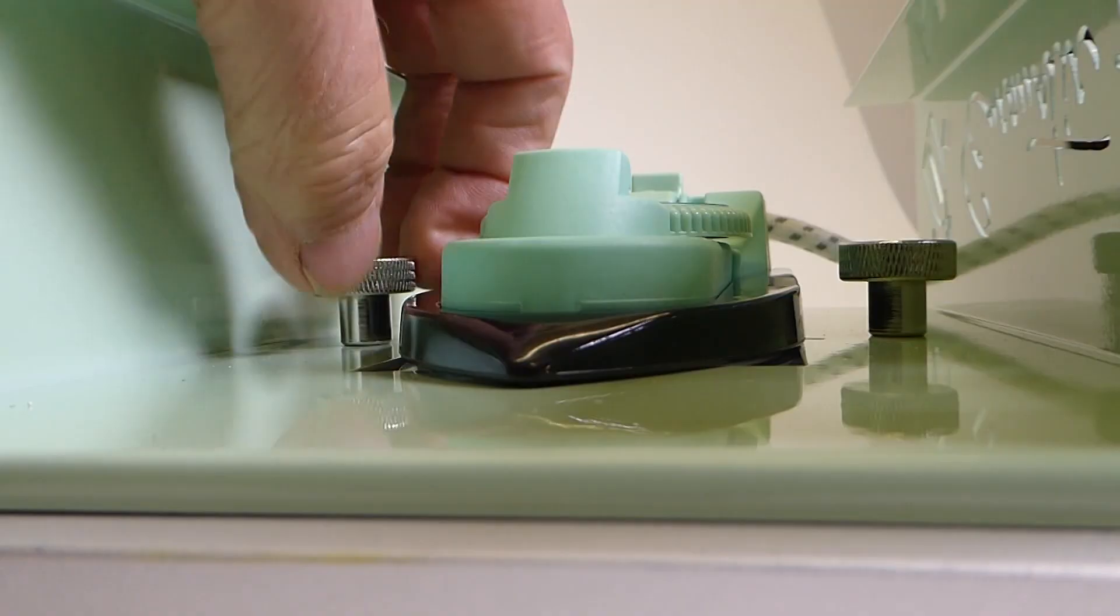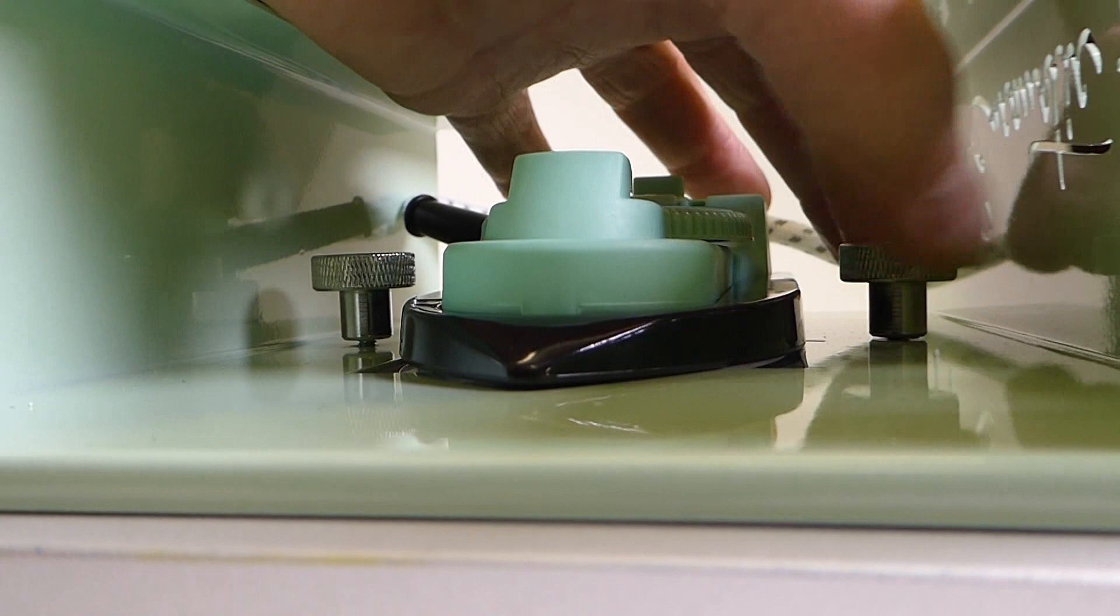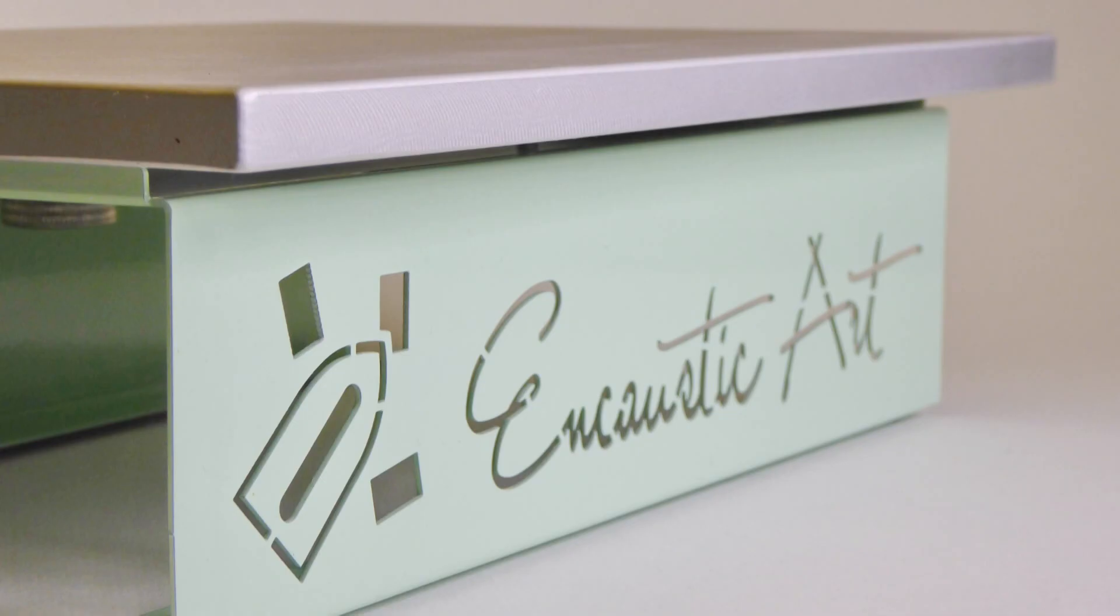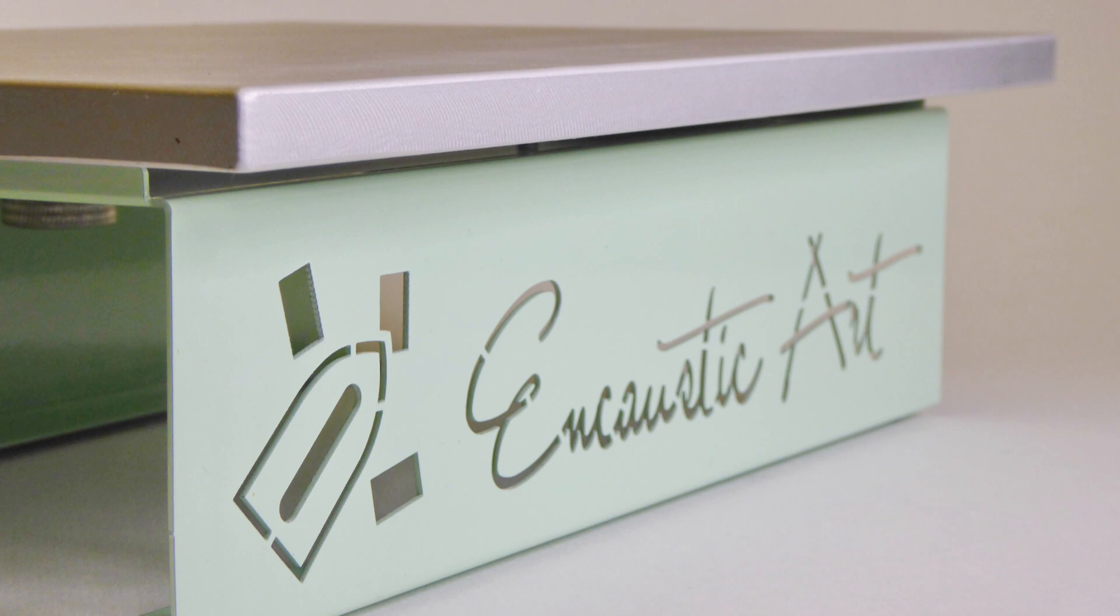When it's cooled down, just undo those knurled nuts. Carefully slide the iron out. And you can use it as an iron again. The compact hot plate, Encaustic Art. There we go.